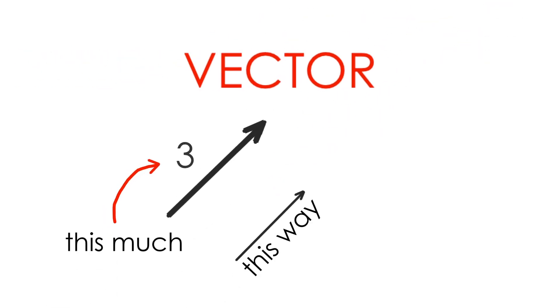Remember, a scalar quantity is just a value with a magnitude, or size, but no direction, unlike a vector quantity, which has both magnitude and direction.